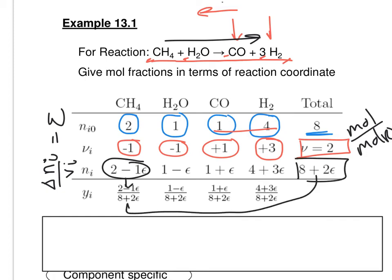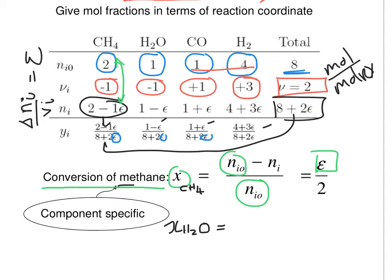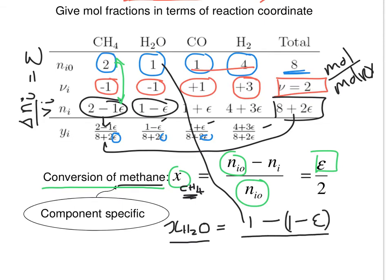Each mole fraction is calculated by dividing the number of moles of that component by the total moles in the system. Repeating this for each component, we can express all four mole fractions in terms of only one unknown — the reaction coordinate. It is also possible to express the conversion of each component, x, in terms of epsilon: it is the initial moles minus the moles at any time divided by the initial amount. For water, the conversion is simply equal to the reaction coordinate.